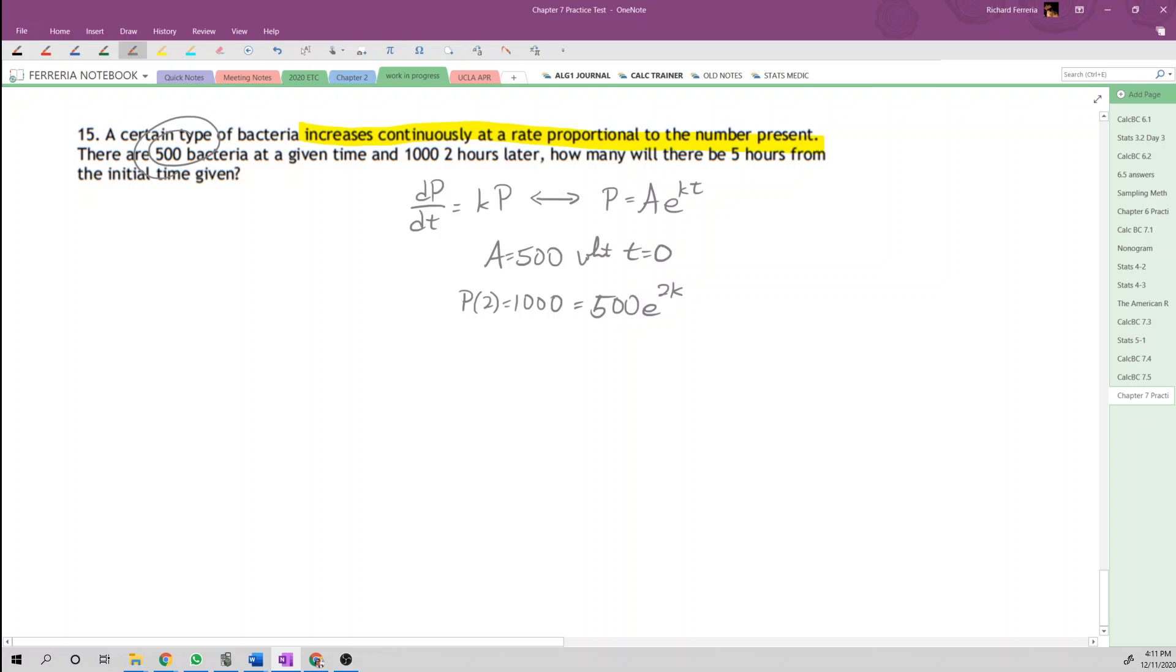Now this is not that bad of a solve. We divide both sides by 500 and get 2. We take the natural log of both sides, then divide by 2. So we get k is one-half of the natural log of 2.